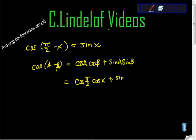Plus sine of pi halves times sine of x. If you remember from your unit circle, pi halves is 90 degrees, and the cosine value here is zero, and the sine value is one.